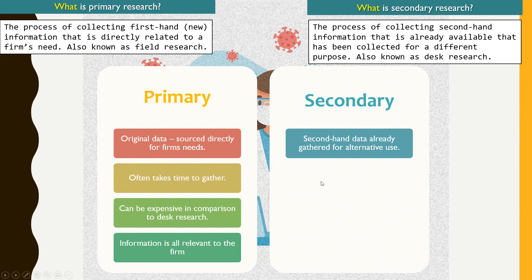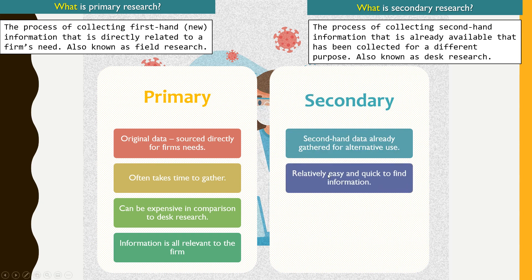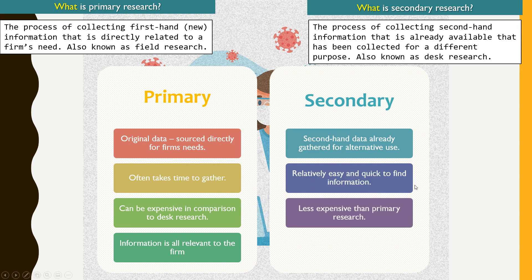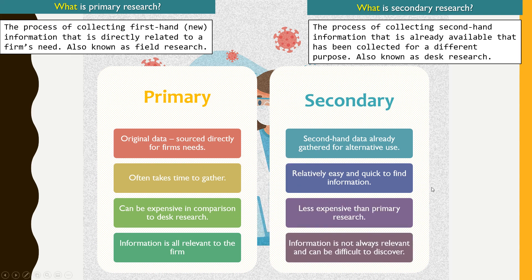As for secondary research, it relates to information that is already available — it is second-hand data. It is easier and faster to find because you can access it on the internet. It is also less expensive, so it would normally be the first method used. However, the information may sometimes not be very relevant, as it was researched by previous companies and may not be catered to your specific needs.